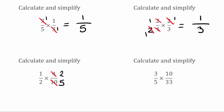Now we've done them individually, we're going to see if we can cross-cancel. Starting with the 1, we've got 1 and 5. The highest common factor there is 1, so we can't cancel them down. Looking the other way, we've got 2 and 2. The highest common factor is 2, so we can divide both by 2. 2 divided by 2 gives 1 for both of them, so both 2s become 1.